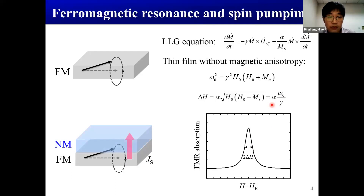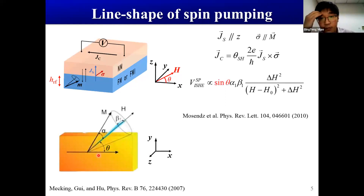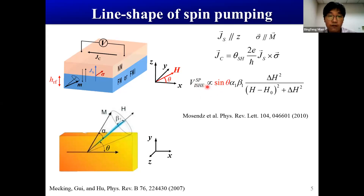The half-linewidth relates to the damping factor alpha. For the ferromagnet and normal metal bilayer, when the ferromagnet precesses, spin current is injected into the normal metal. Due to the loss of angular momentum, the damping as well as the half-linewidth of the ferromagnet will increase. When the spin current enters the normal metal, it will be detected through the inverse spin Hall effect. The spin-pumping-induced inverse spin Hall effect scales with the spin Hall angle and has a relation with spin diffusion length.